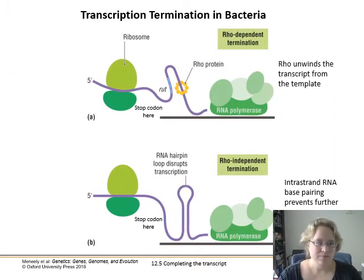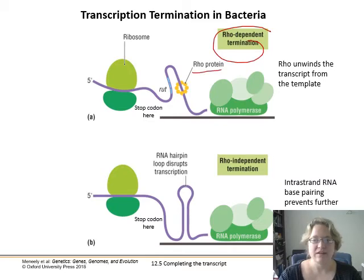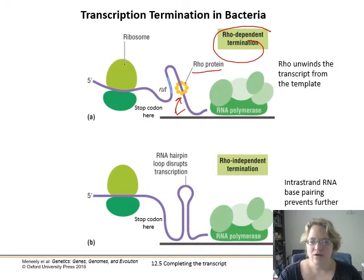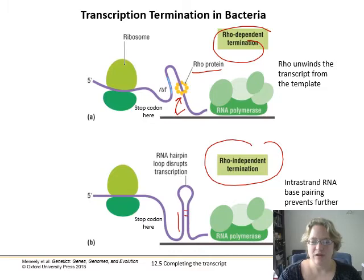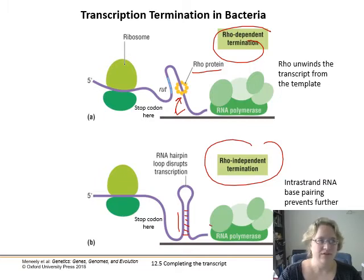How do bacteria stop transcription? Two ways: either there's rho-dependent termination, where there's literally a protein that removes the transcript from the template — it pulls the transcript right off and stops RNA polymerase from continuing — or we have rho-independent termination, where an RNA hairpin forms due to complementary bonds within the mRNA, and then the RNA polymerase can't progress and stops.